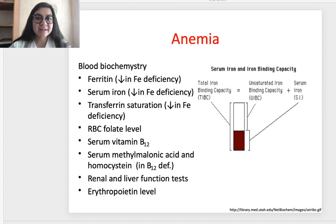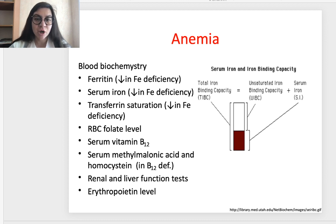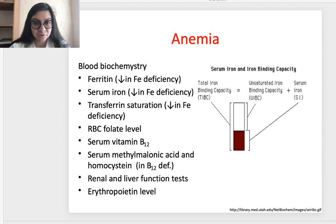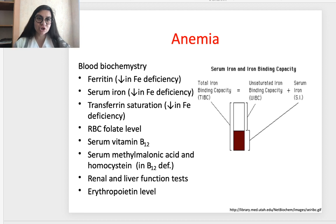In blood chemistry in anemias we can find: decreased ferritin and decreased serum iron for iron deficiency anemia, and decreased transferrin saturation — these three biochemical signs are checked for iron deficiency anemia. For folate deficiency anemia, we check red blood cell folate level. For B12 deficiency anemia, we check vitamin B12 level, serum methylmalonic acid, and homocysteine. We also obligatorily check renal and liver function tests and erythropoietin level.